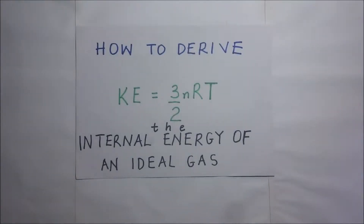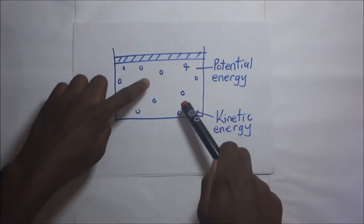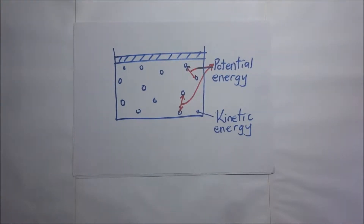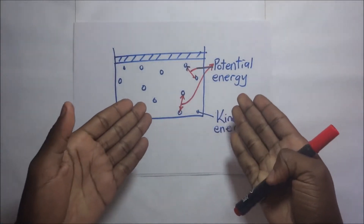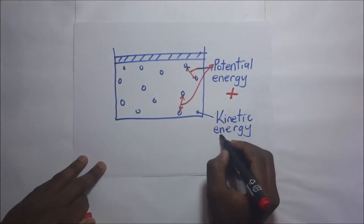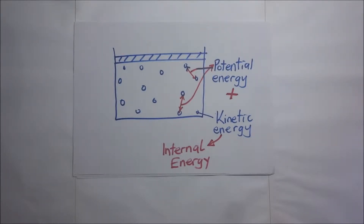In our previous sessions we discussed the first law of thermodynamics, where we illustrated using a real gas. A real gas has randomly moving particles whose average velocity gives us the measure of kinetic energy, and it also has intermolecular forces of attraction between the molecules. The measure of these intermolecular forces gives us the potential energy of the gas.